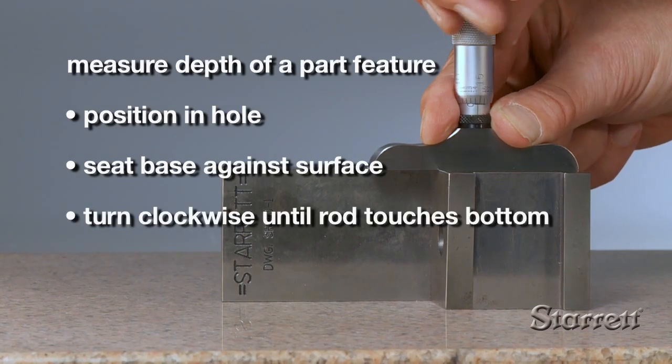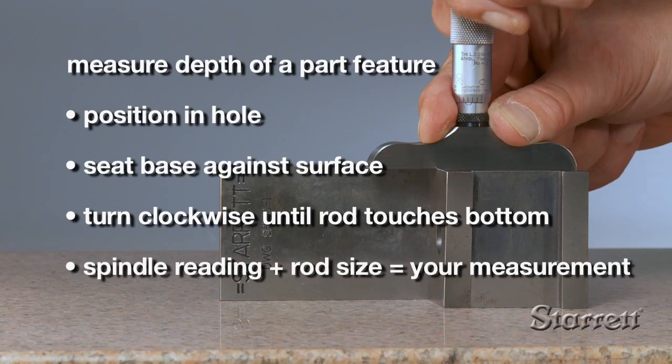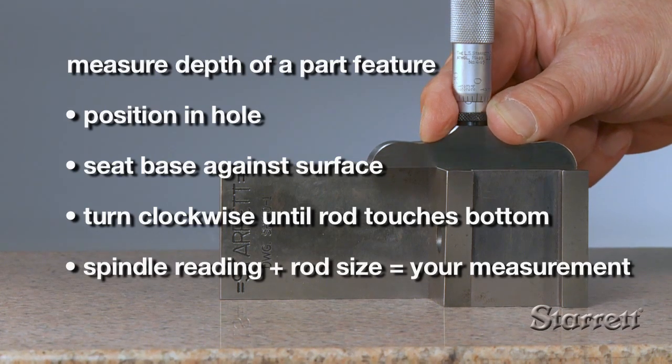Next, turn the spindle slowly in a clockwise direction. When the tip of the rod touches the bottom of the hole, immediately stop turning.